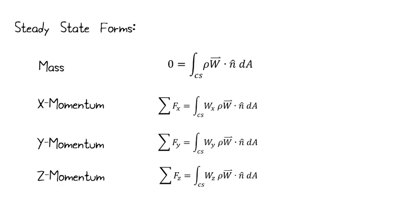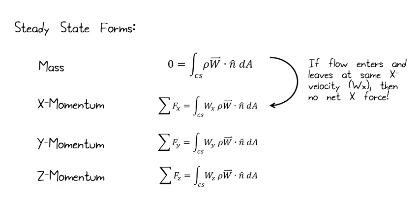Let's summarize that. Here's our steady state forms. We have rho, w dot n dA, the integral over that area equals zero. That's conservation of mass. And then our three conservation of momentum equations, we have acting in the x direction, acting in the y direction, acting in the z direction, because our momentum is a vector.